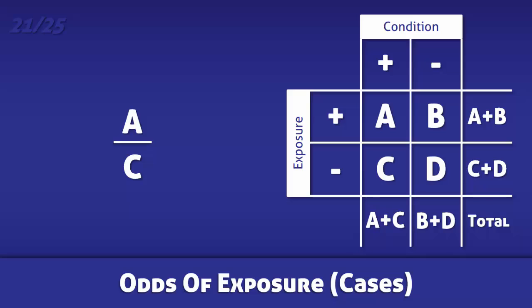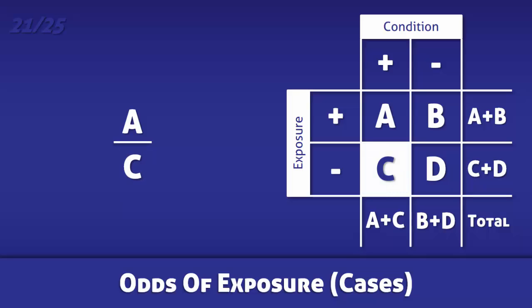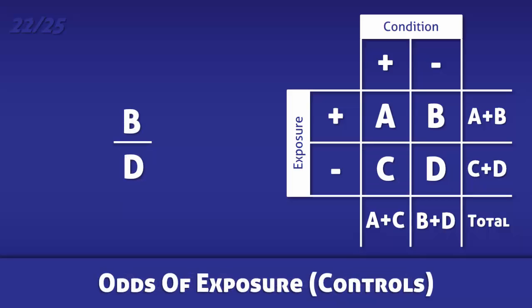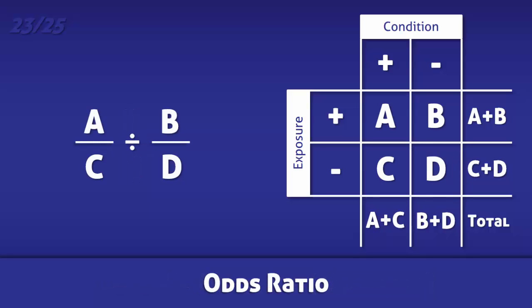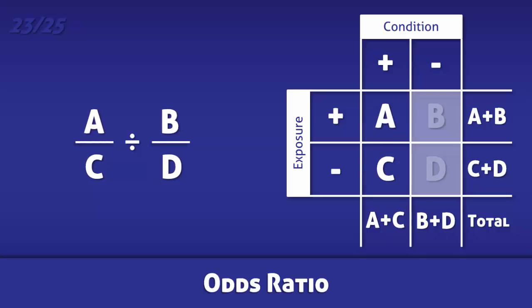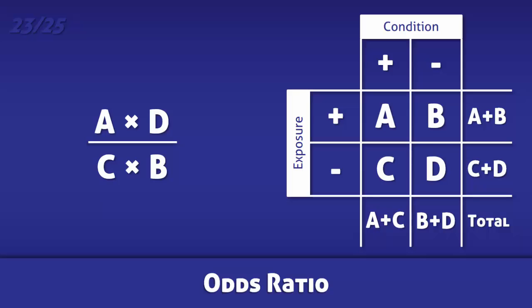For odds of exposure amongst cases, divide the number of people with a condition who were exposed to a risk factor by the number of people with it who were not exposed. For odds of exposure amongst controls, divide the number of people without a condition who were exposed to a risk factor by the number of people without it who were not exposed. For odds ratio, divide the odds of exposure amongst cases by the odds of exposure amongst controls. Alternatively, you may divide A times D by C times B.